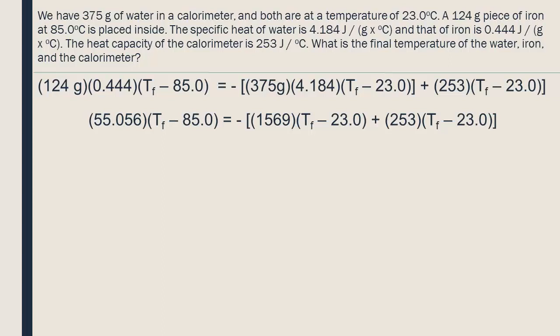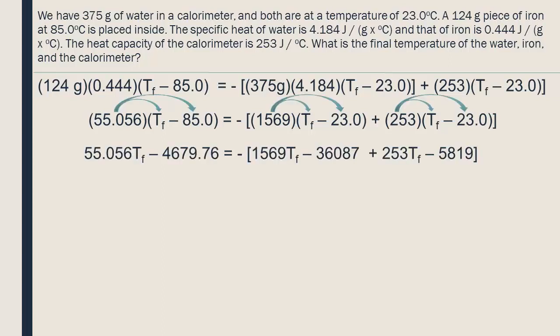We multiply the mass by the specific heat, then we distribute this factor into both the final and initial temperatures. We put all the terms with T_f onto one side of the equation, and leave the rest on the other side. Don't forget to take the negative sign into account.